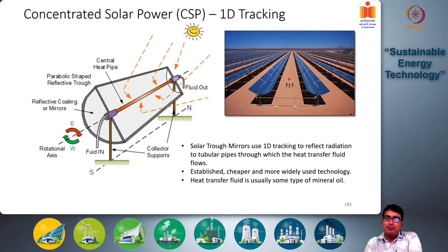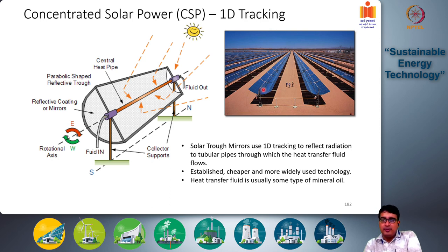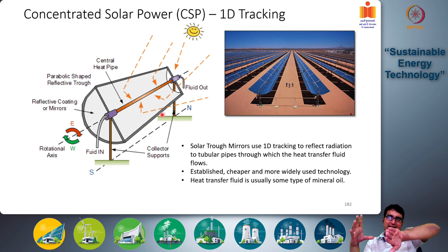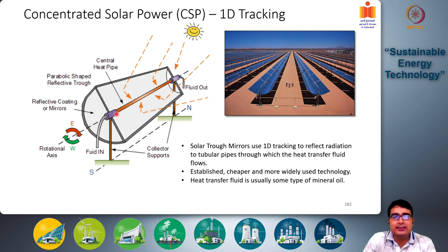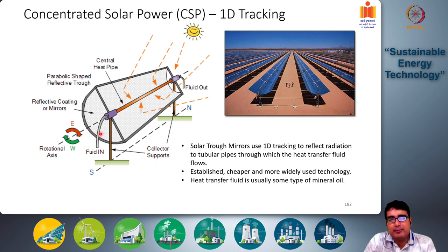This is an example of the parabolic mirrors discussed earlier — long arrays of mirrors. At the central region you can see the heat pipe through which the heat transfer fluid flows, and the parabolic mirror concentrates solar radiation onto these pipes. This type of parabolic mirror uses 1D tracking, moving in only one direction — east to west — so during sunrise it faces east and at sunset it points west. The sun's rays are reflected and concentrated into these heat pipes, which become quite hot, as the mirrors are made with reflective coatings that maximize the amount of sunlight incident on the heat pipe surface.